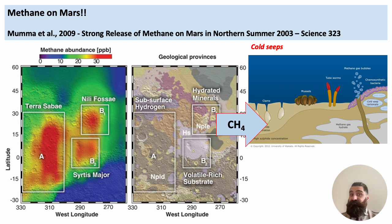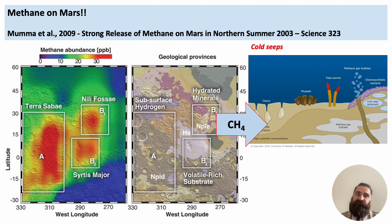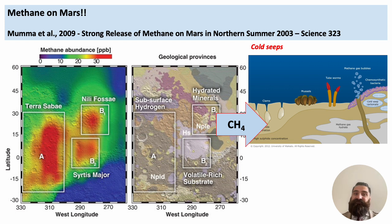The fact that there is methane on Mars has been proven — first detected in the early 2000s in the atmosphere. The presence of methane was strongly debated for a few years, but with new missions and new data we have confirmed the presence of methane in Mars' atmosphere. We're not expecting cold seeps right now on Mars, but there might have been extreme environments similar to cold seeps on early Mars, and hence environments that might be compared with terrestrial cold seeps.